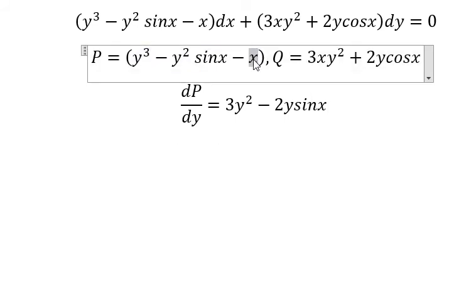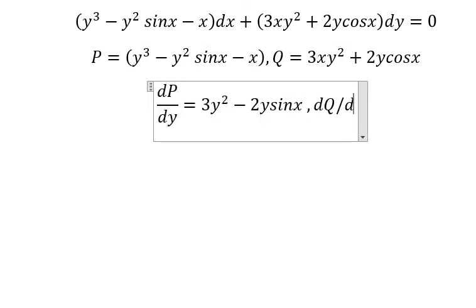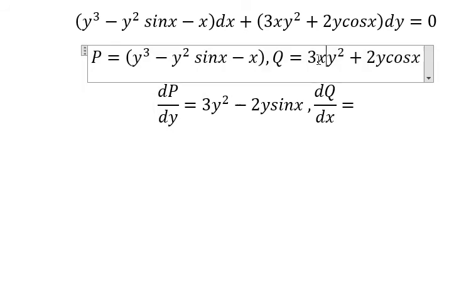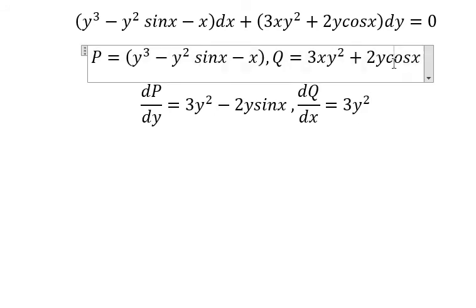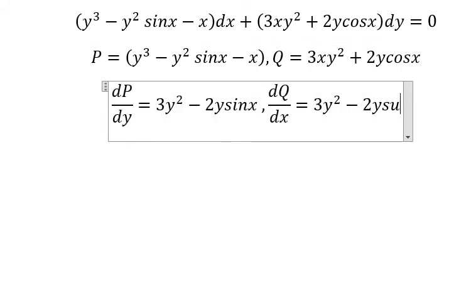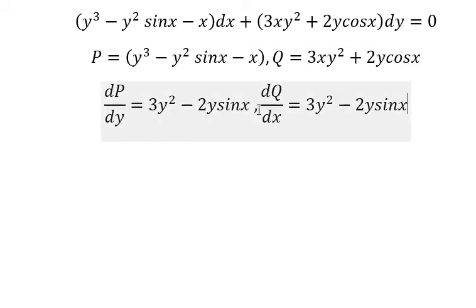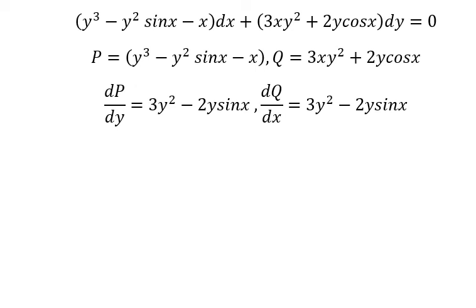Since this term is about x only, its first derivative with respect to y is zero. Now we do the same with dQ/dx. The first derivative of x gives us one, so we have three y squared. The first derivative of cosine x gives us negative sine x. Since dP/dy equals dQ/dx, this equation is exact.